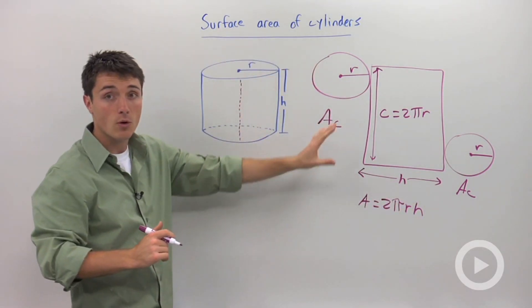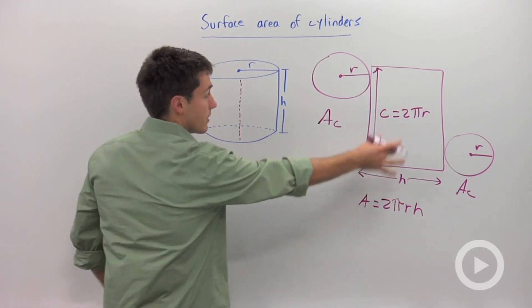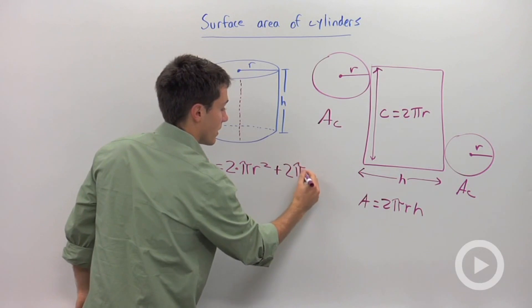So the surface area of the whole cylinder is going to be the area of the two circles plus the area of that middle piece, the lateral area.